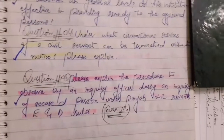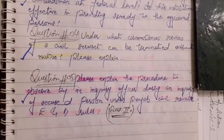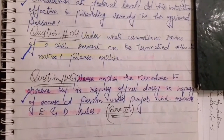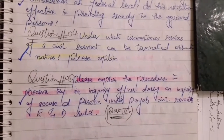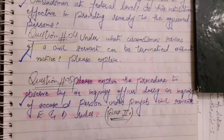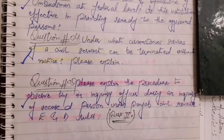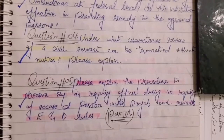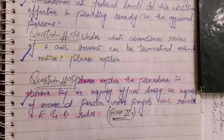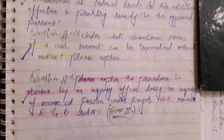Question number four: Under what circumstances can the services of a civil servant be terminated without notice? How can the termination be carried out?